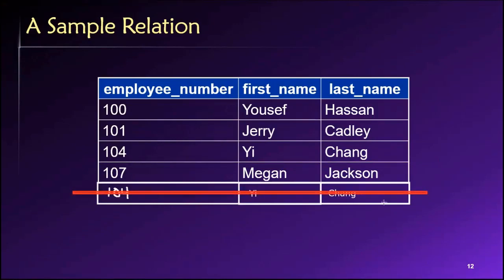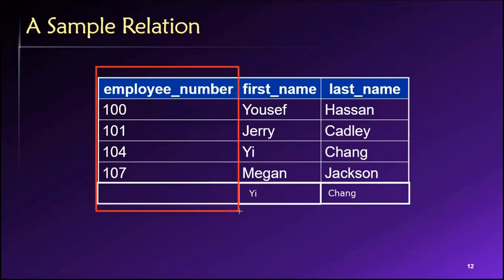However, we have previously established that in this scenario, employee number is a unique key. And that means that every single value in this column must be unique. It cannot be repeated within the table. So based on this, we know then that there will be some sort of different employee number for our new employee here, maybe 103.